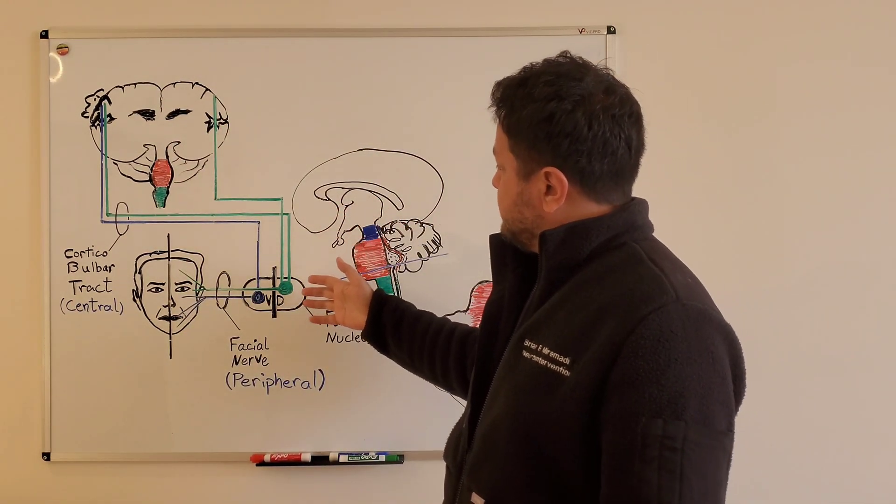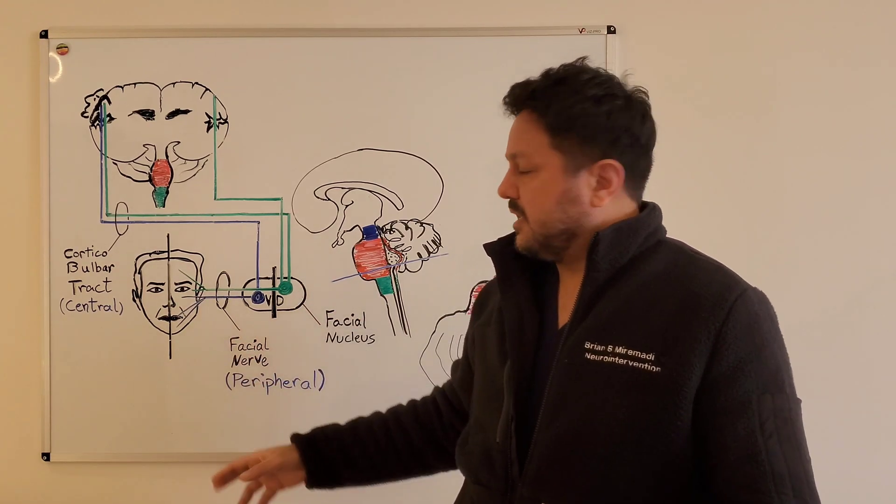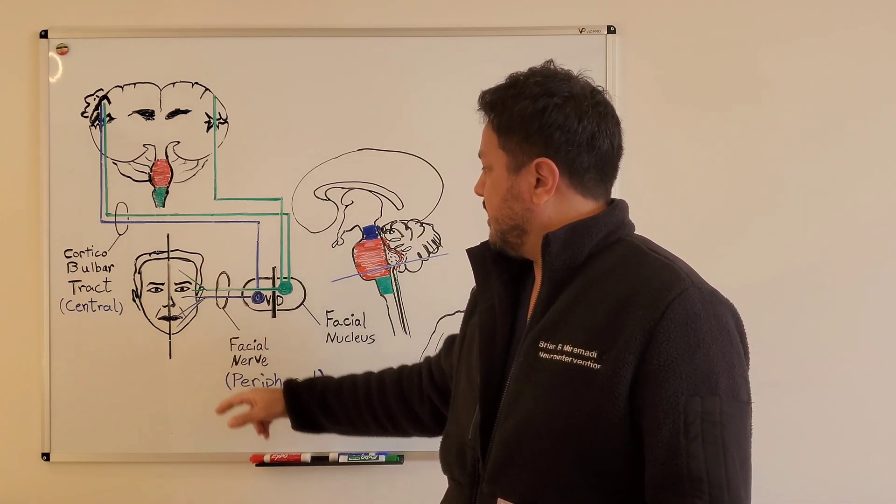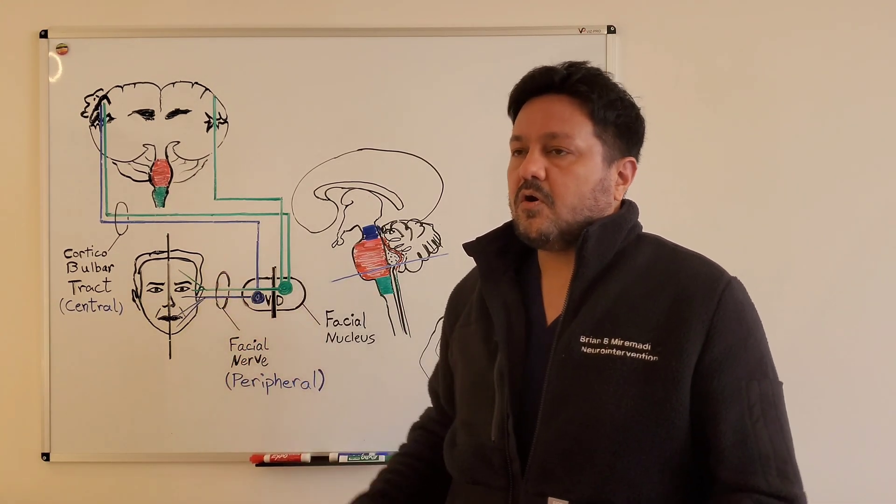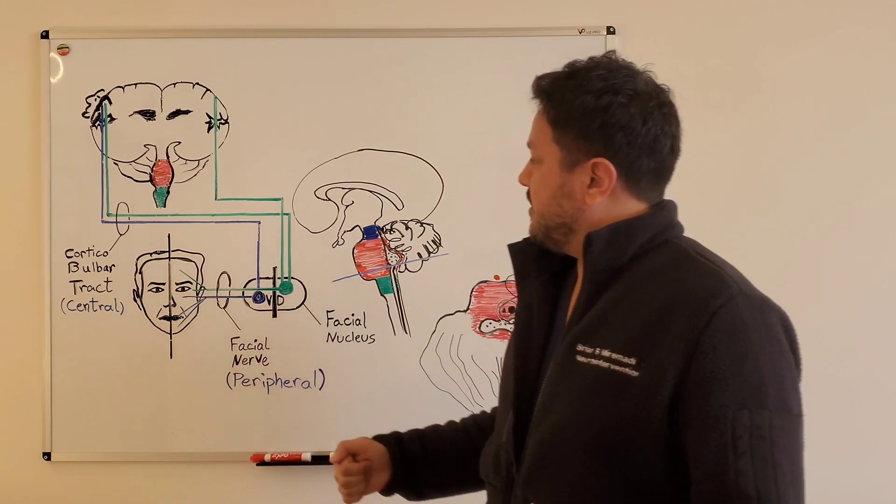So as you can see, if there is a lesion here, such as in Bell's palsy affecting the facial nerve itself, you're going to involve all of these fibers. So both the upper face and the lower face will be involved.